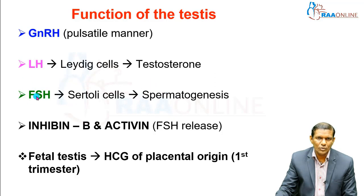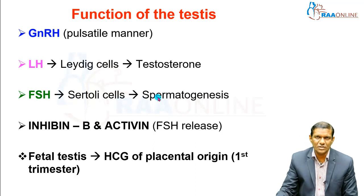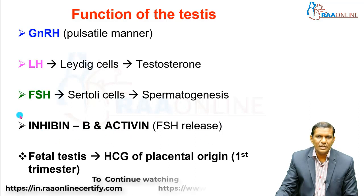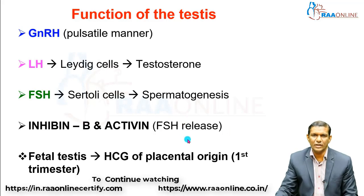Follicle-stimulating hormone acts on Sertoli cells, causing sperm production and maturation, and is involved in spermatogenesis. Additionally, inhibin B and activin have indirect roles in controlling FSH release — inhibin B inhibits FSH release, whereas activin activates FSH release from the pituitary gland.